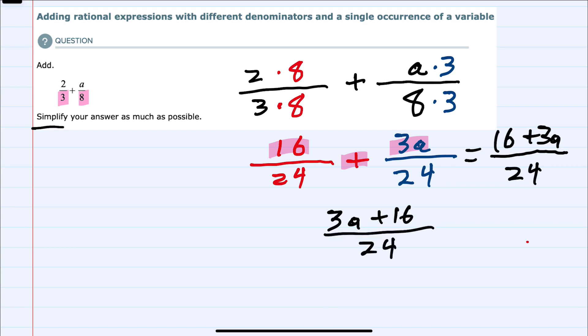I would continue to simplify if possible. So here if there was anything that I could factor out of the top then I would want to do so and then try to simplify the fraction, but there are no common factors between 3a and 16 so we can't simplify this fraction any further.